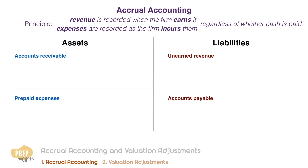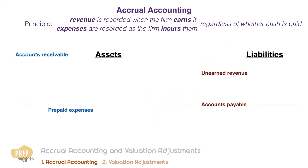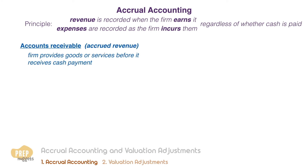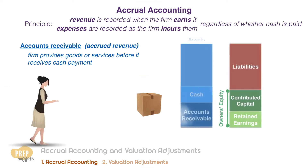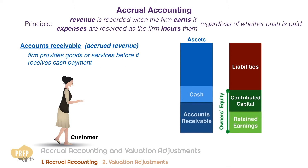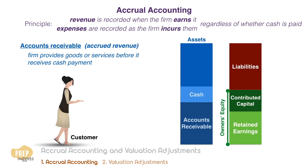These four accounts are there to enable accrual accounting. Accounts receivable belongs to the category of accrued revenue. This account is updated every time the firm provides goods or services before it receives cash payment. For example, a customer may first collect the goods and opt to pay later. In this case, the seller would recognize the revenue even when cash has not been received, recorded on the balance sheet as accounts receivable, and retained earnings increase by the same amount.